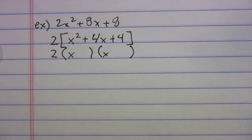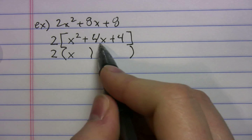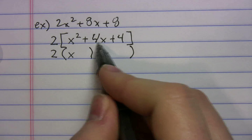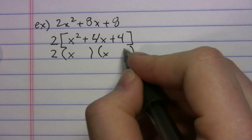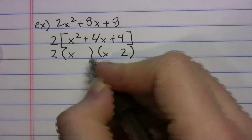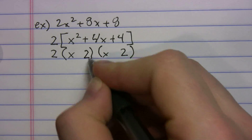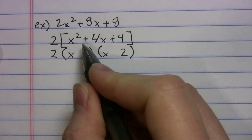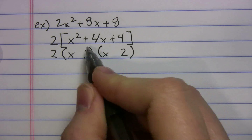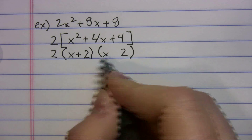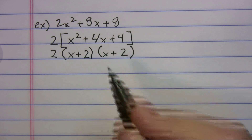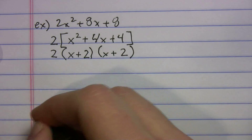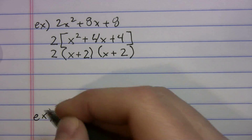Now factor what's in the brackets. Put the x's in the double bubble. To get to 4: 4 and 1 won't add to 4, so it's got to be 2 and 2. All signs are positive, so the answer is 2(x + 2)(x + 2), or 2(x + 2)².